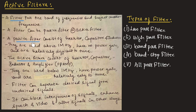A passive filter consists of resistor, capacitor, and inductor — only passive components. They are used above 1 MHz, have no power gain, and they are relatively difficult to tune.